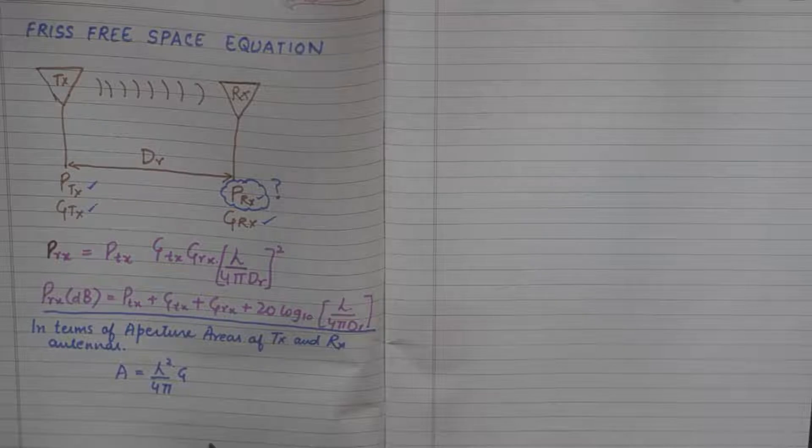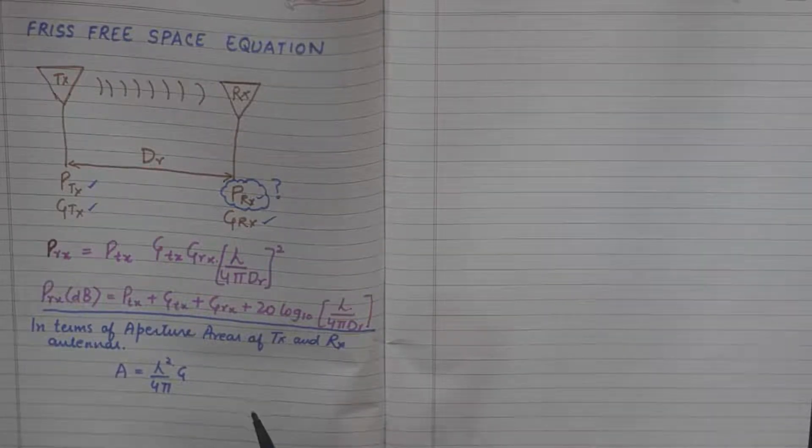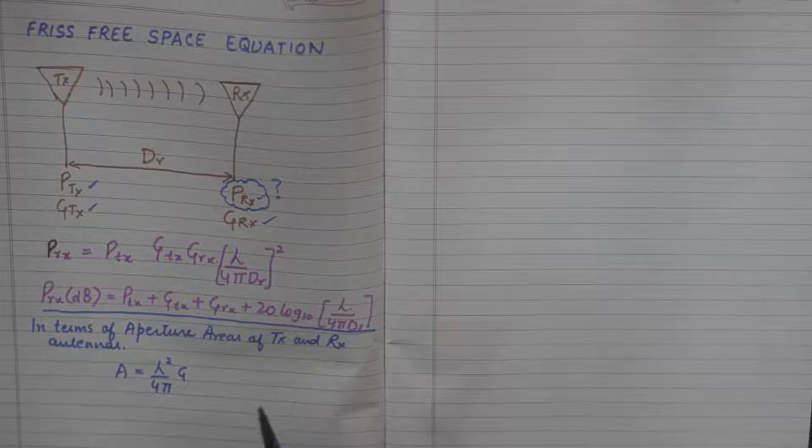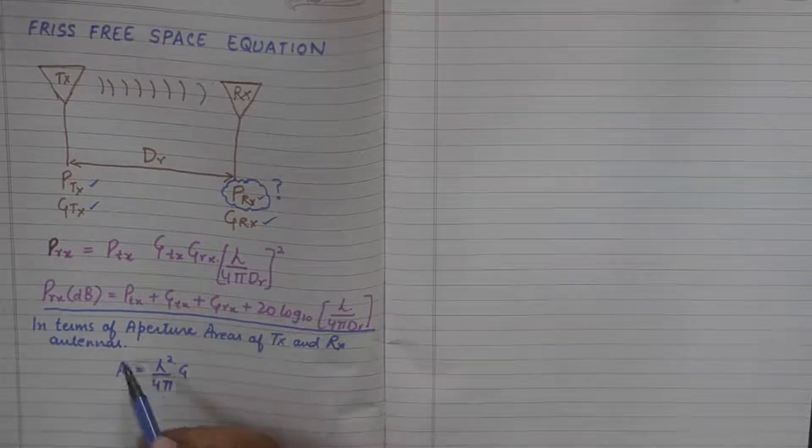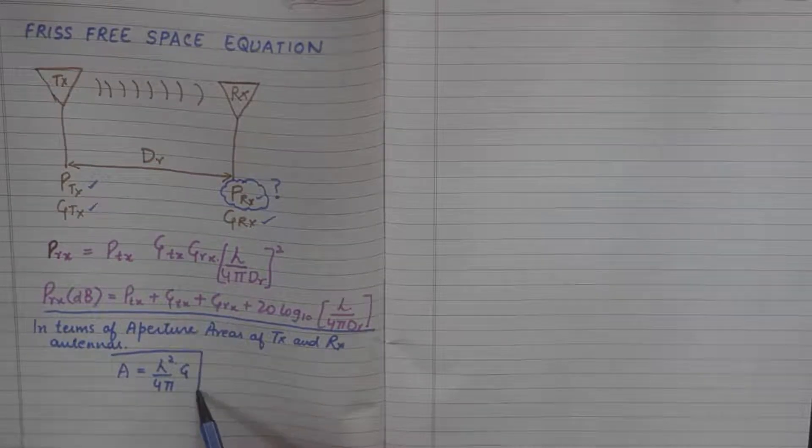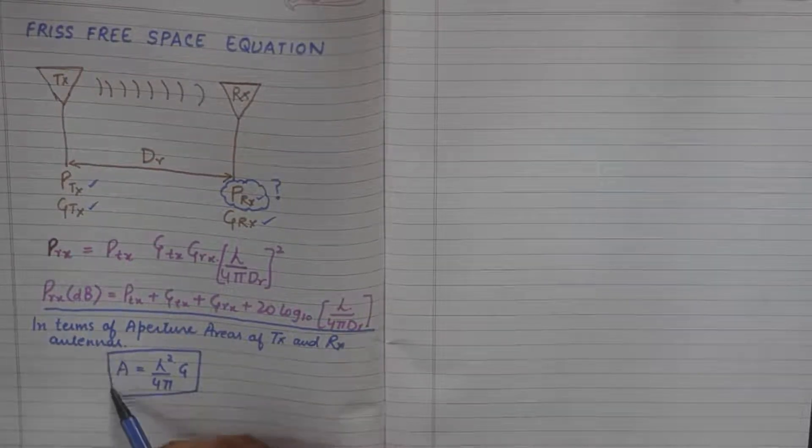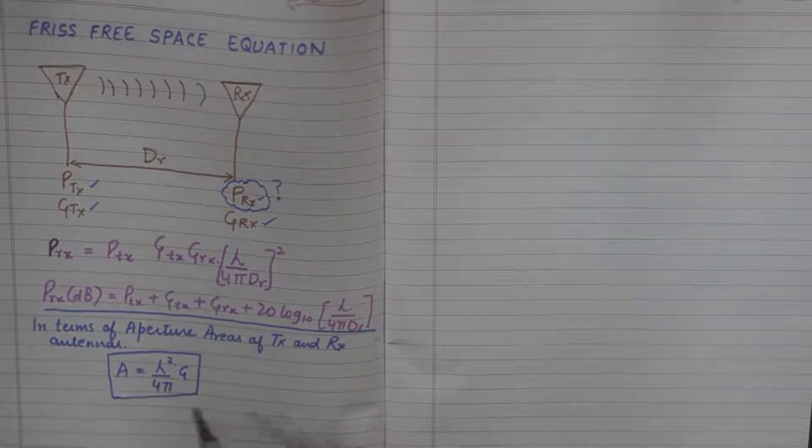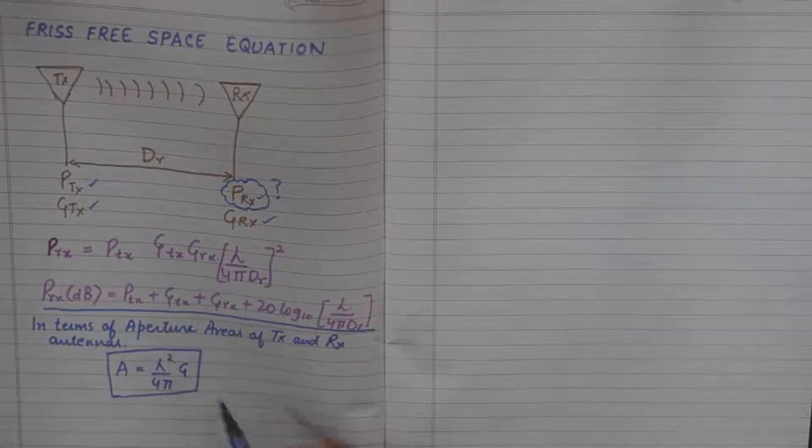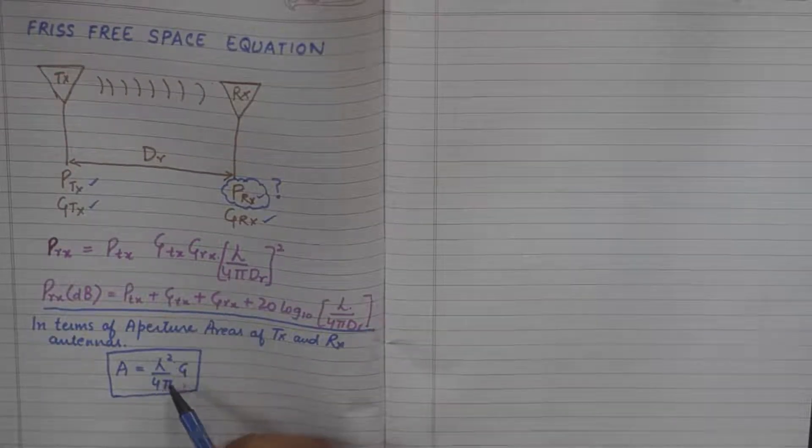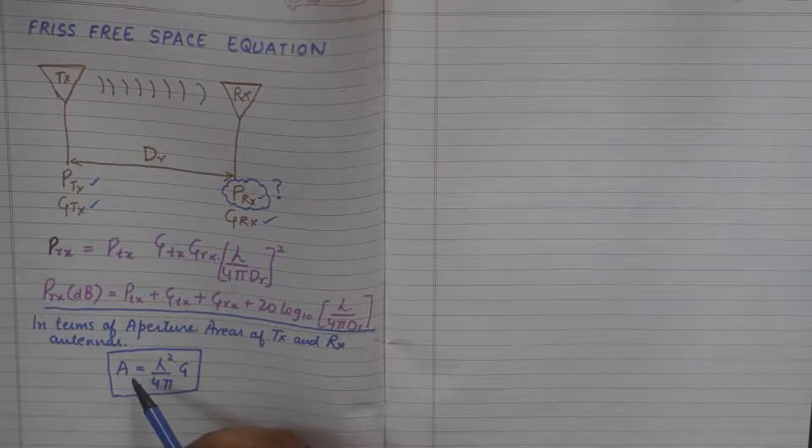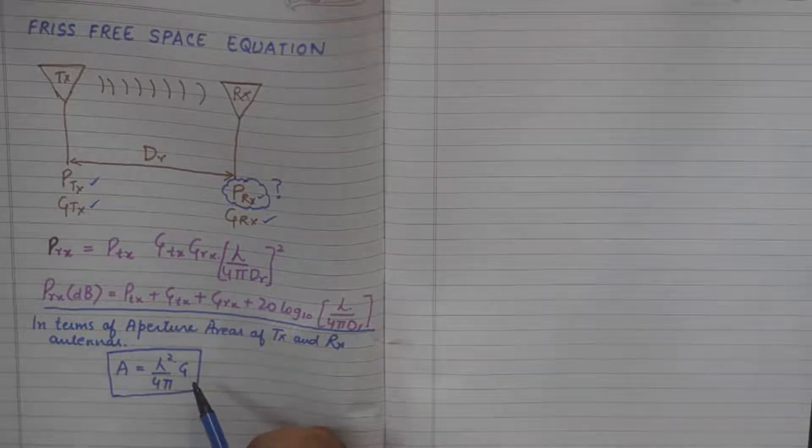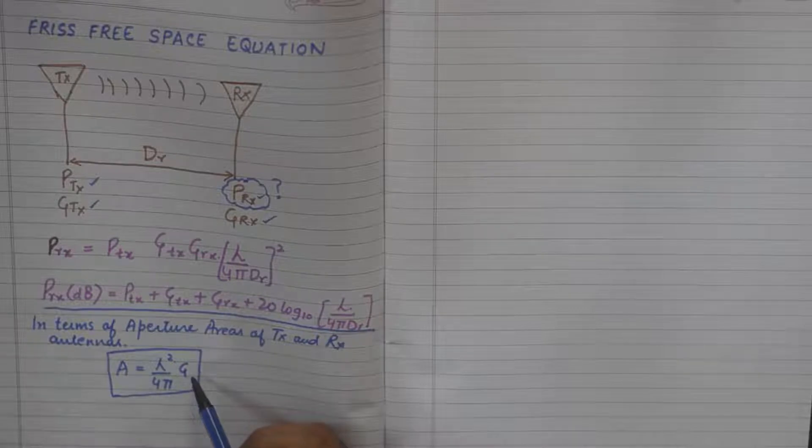Now at times in numerical problems you may be given the aperture area of the antennas, so this formula could prove handy. We know the relation of aperture with the gain of the antenna is lambda squared upon 4π into gain. So if the effective aperture area of antennas is given, you can calculate gain and vice versa.